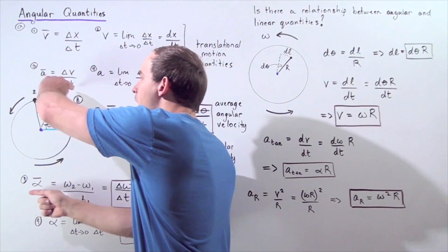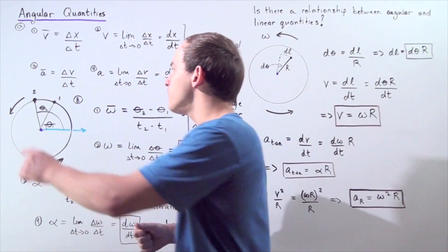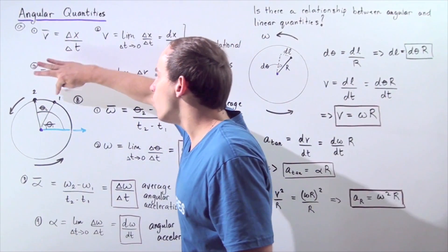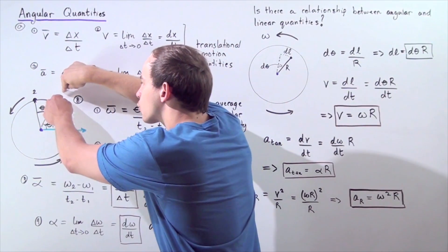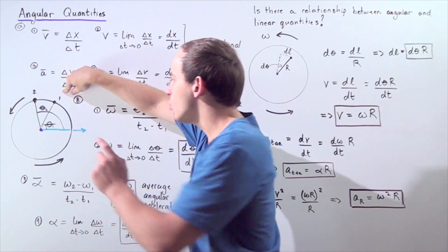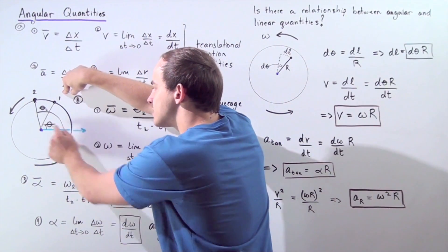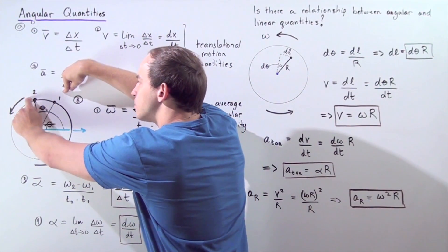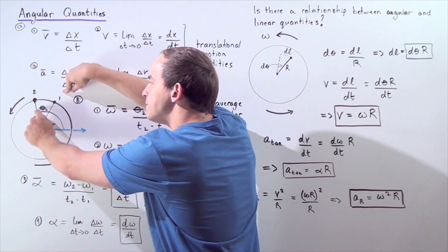We begin at point one, our object rotates over some time interval, and ends up at point two. When the object is at point one, the radius of the circle makes an angle theta one with respect to some reference axis — the blue axis. When the object is at point two, the angle is given by theta two.